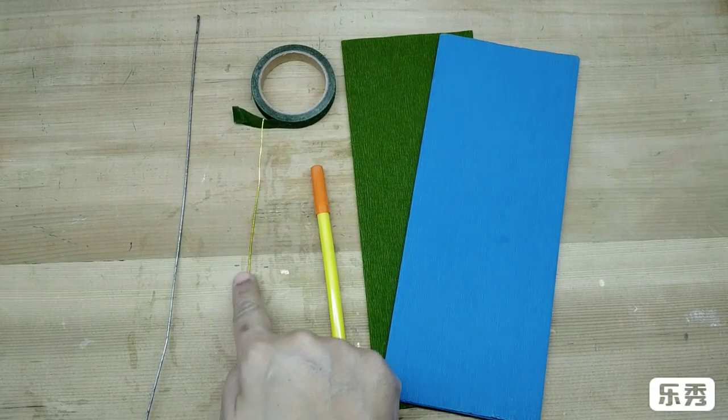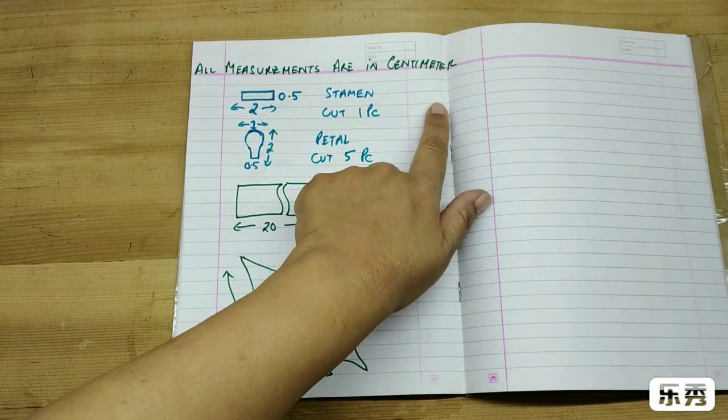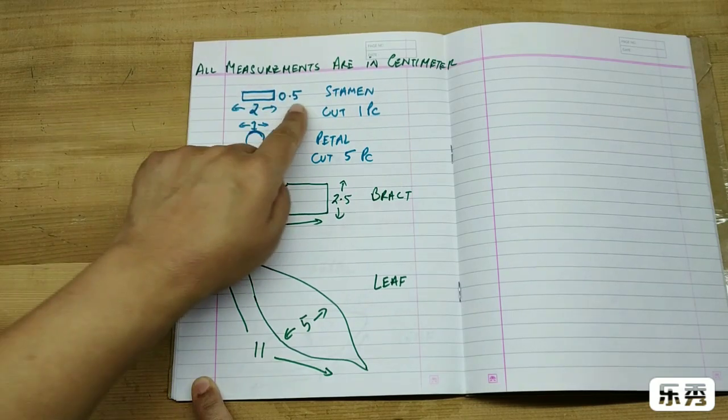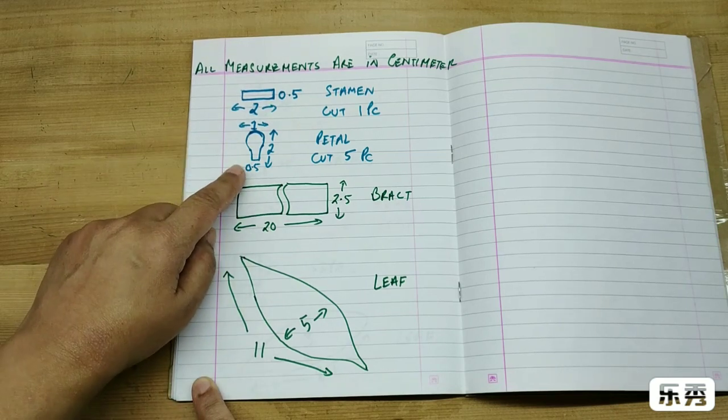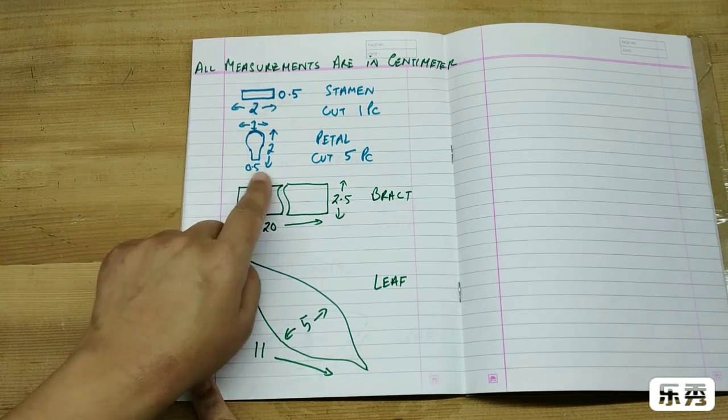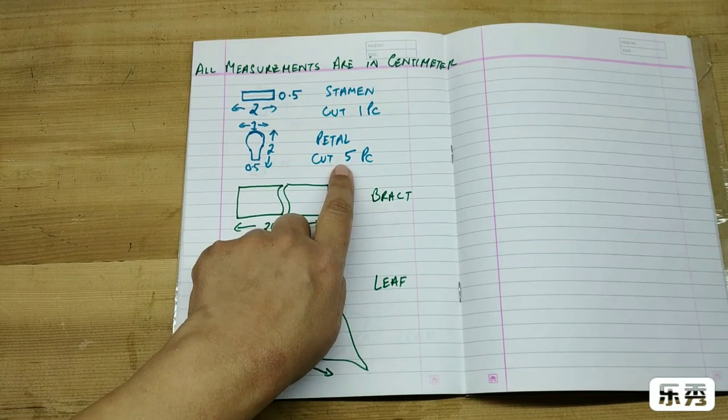All the measurements are in centimeters. This is the stencil for the stamen, 0.5 by 2 centimeter strip. This is the petal, 1 centimeter wide here and 2 centimeter high, and the base is 0.5 centimeter. Cut five pieces of this and one piece of the stamen.